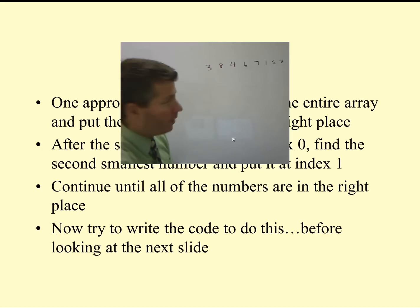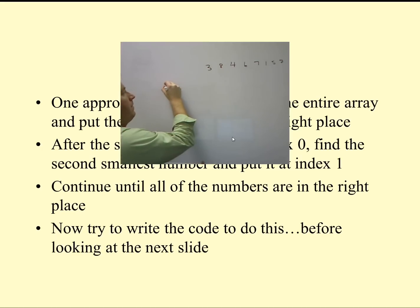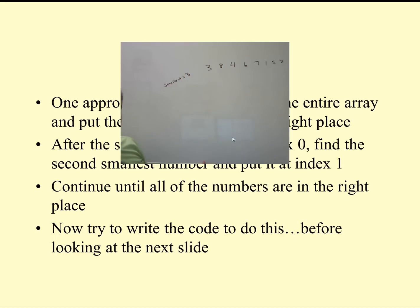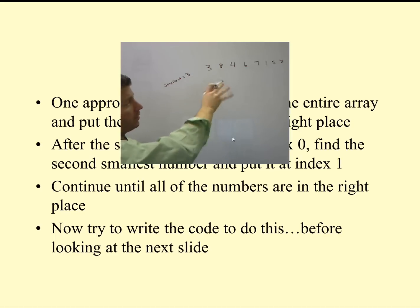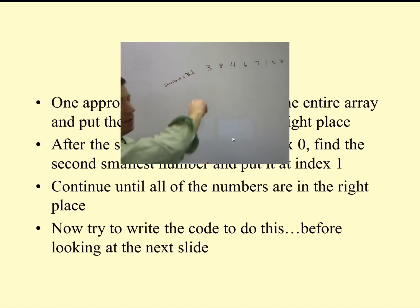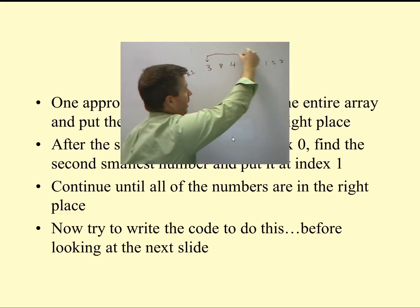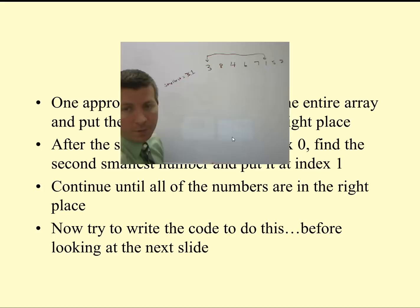From what we know right now, the smallest number is 3. We go to 8 — 8 is bigger than 3, we don't want that. We go to 4 — 4 is bigger than 3. 6 is bigger than 3. 7 is bigger than 3. Then 1 is smaller than 3, so now the smallest number becomes 1. 5 is bigger than 1. 2 is bigger than 1. So we've found our smallest. Let's take number 3 and swap it with number 1.